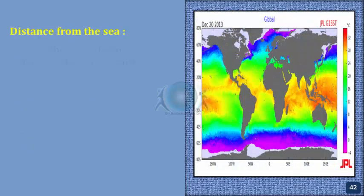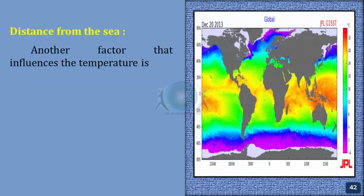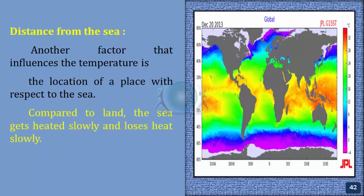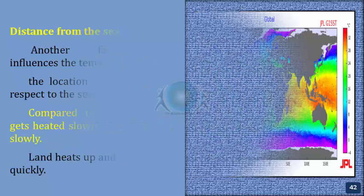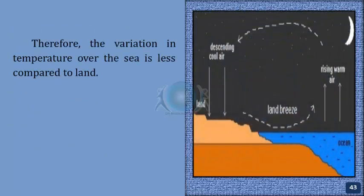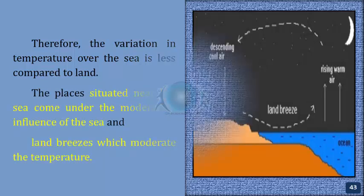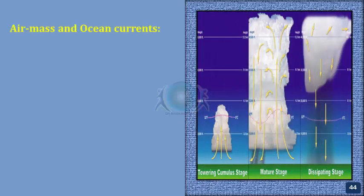Distance from the sea. Another factor that influences temperature is the location of a place with respect to the sea. Compared to land, the sea gets heated slowly and loses heat slowly. Land heats up and cools down quickly. Therefore, the variation in temperature over the sea is less compared to land. Places situated near the sea come under the moderating influence of the sea and land breezes, which moderate the temperature.